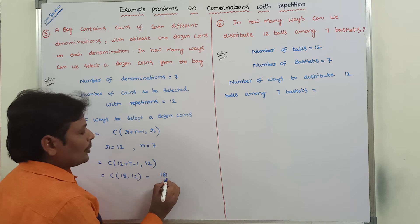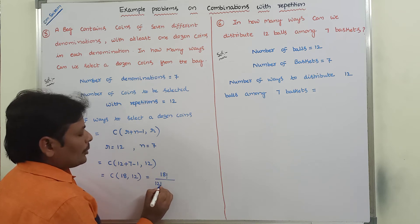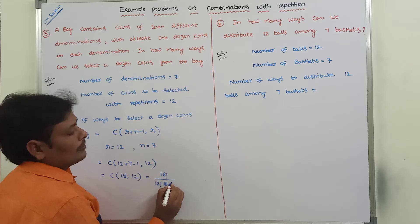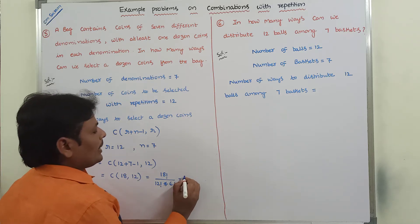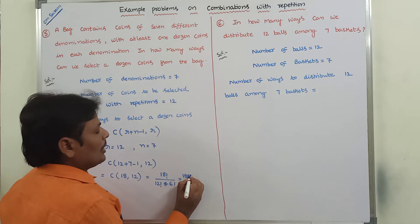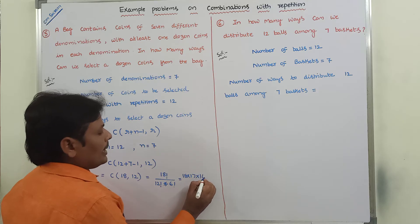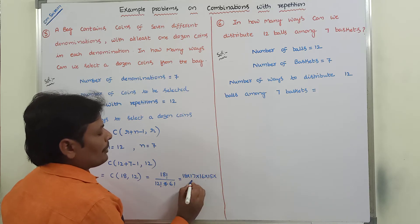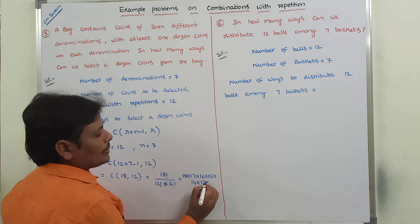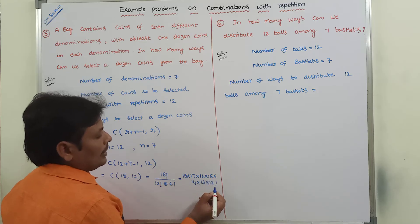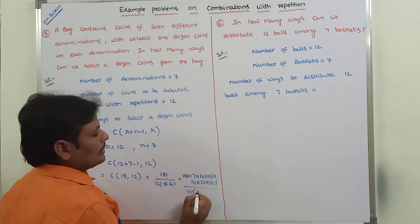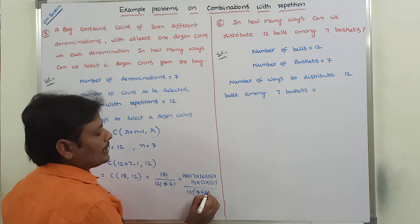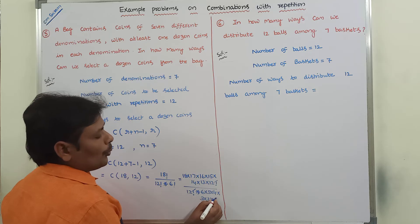C(18, 12) equals 18 factorial divided by 12 factorial into 6 factorial. This can be written as 18 × 17 × 16 × 15 × 14 × 13 × 12! divided by 12! × 6 factorial, where 6 factorial equals 6 × 5 × 4 × 3 × 2 × 1. The 12 factorials cancel.